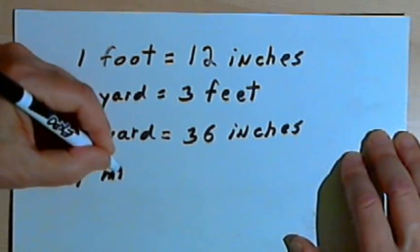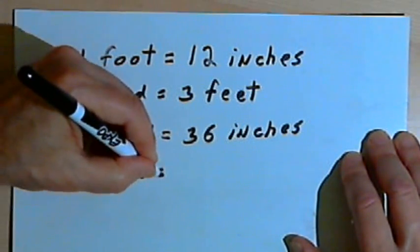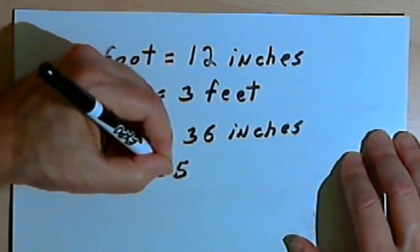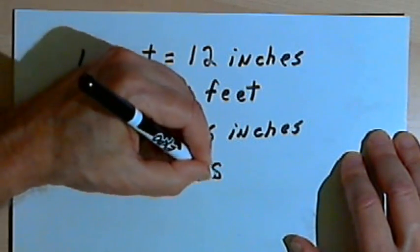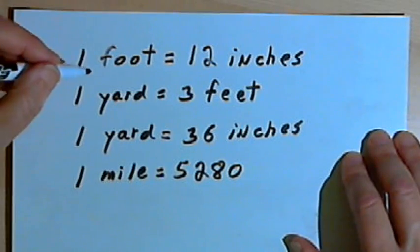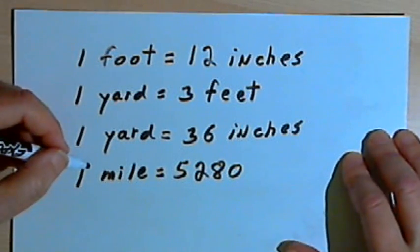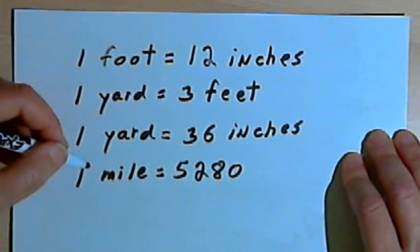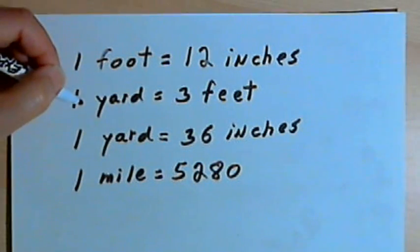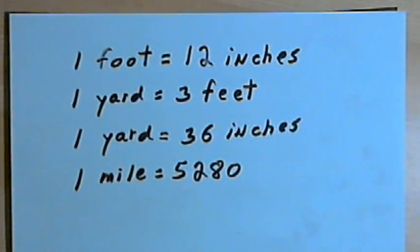We've also got miles. One mile is equal to 5,280 feet. So these are some facts that you should have memorized. When you get a chance, make sure you commit them to memory. Now let's go on to a problem.